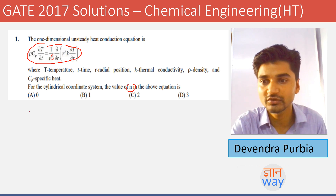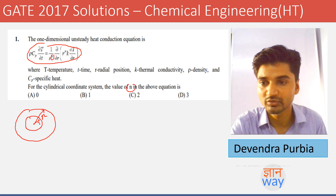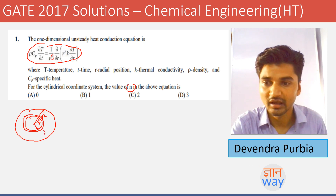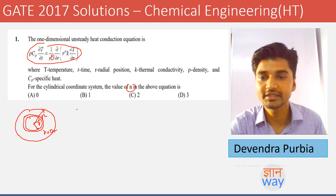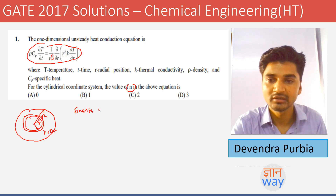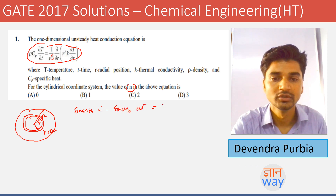We will derive this equation by considering a cylinder of radius r, with an elemental cylinder of small radius r and outer radius r plus delta r. We will apply the energy balance: energy in minus energy out equals rate of accumulation.